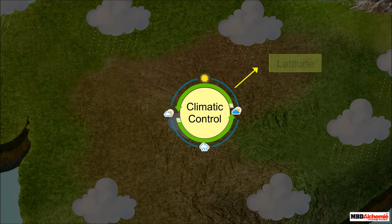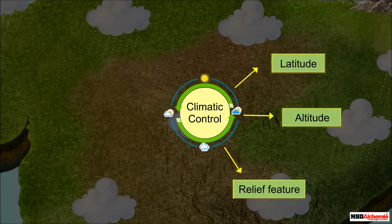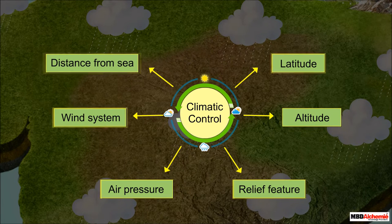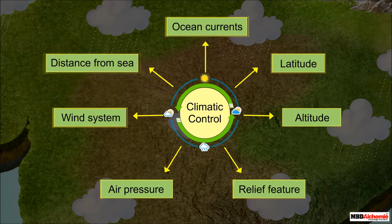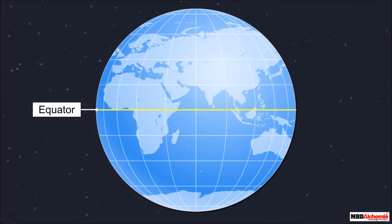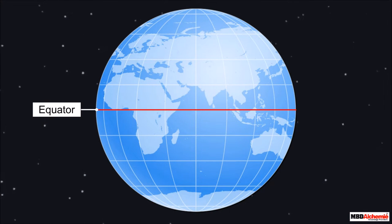These factors are called climatic control. There are six main climatic controls that affect the climate of a place. These are latitude, altitude, relief feature, air pressure and wind system, distance from the sea, and ocean currents.